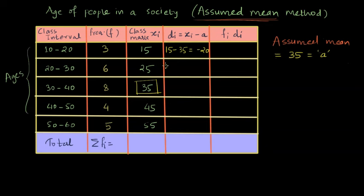Similarly, if we keep on doing the same process, 25 minus 35, this is going to give me minus 10. Then 35 minus 35 is simply zero. For 45 minus 35, we get 10 and for 55 minus 35, we get 20.